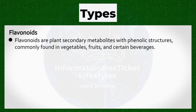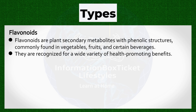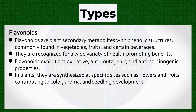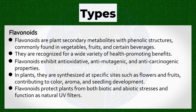Flavonoids are plant secondary metabolites with phenolic structures, commonly found in vegetables, fruits, and certain beverages. They are recognized for a wide variety of health-promoting benefits, exhibiting antioxidative, antimutagenic, and anti-carcinogenic properties. In plants, they are synthesized at specific sites such as flowers and fruits, contributing to color, aroma, and seedling development. Flavonoids protect plants from both biotic and abiotic stresses and function as natural UV filters.